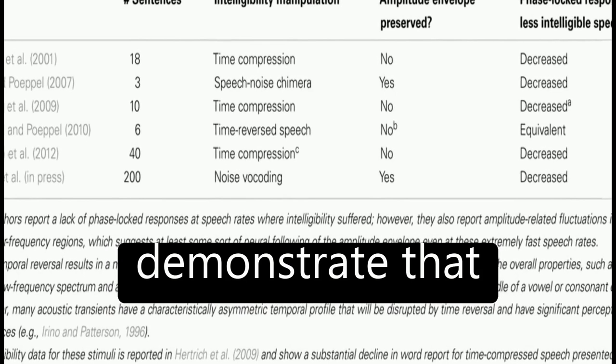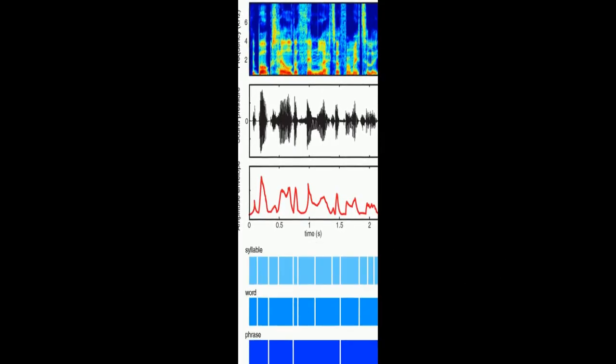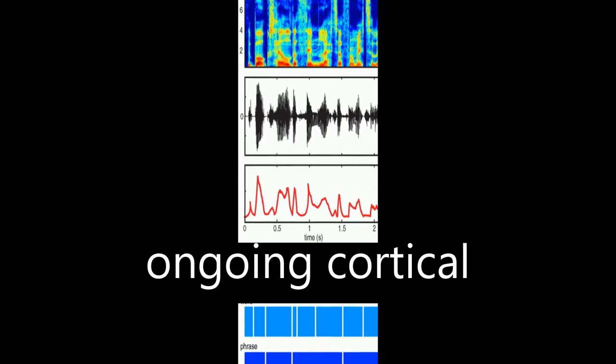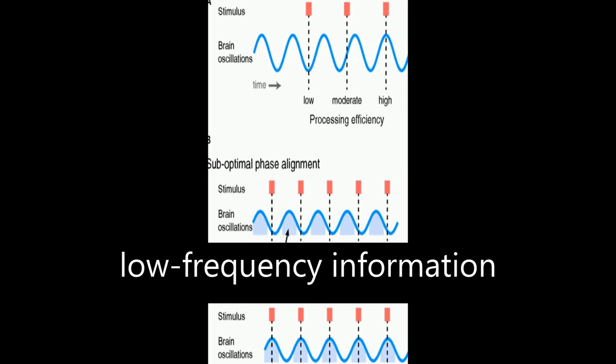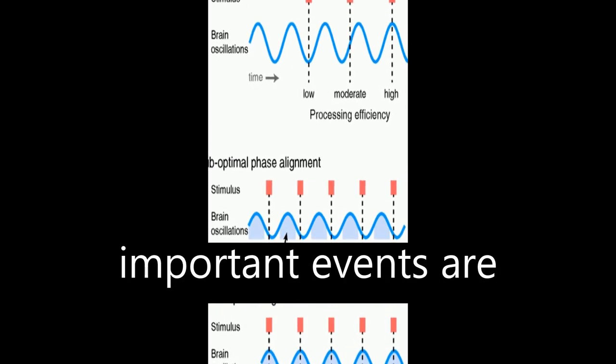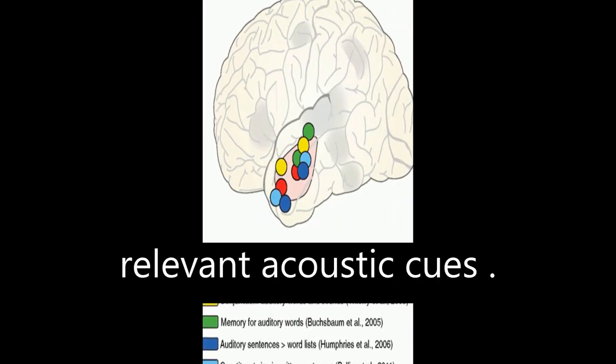Behavioral studies demonstrate that listeners rely on this information for speech intelligibility. Neuroimaging data shows that phase locking by ongoing cortical oscillations to low-frequency information in the speech envelope effectively encodes a prediction of when important events are likely to occur, increasing sensitivity to relevant acoustic cues.